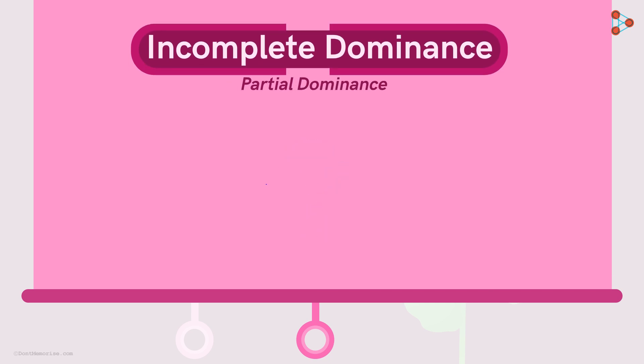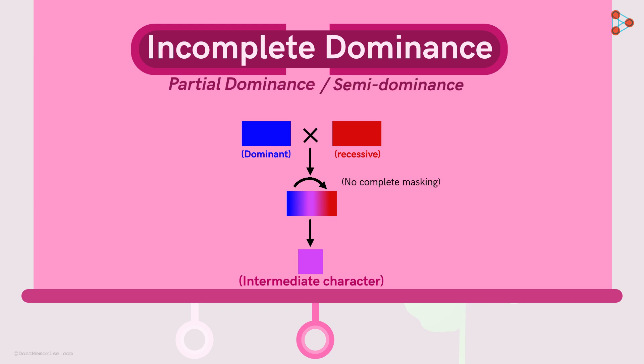Does it indicate that the dominance is partial? That's right! The dominant character expresses itself, but not completely. It means that the dominant alleles do not completely mask the effect of the recessive alleles. As a result, offsprings with intermediate characters are obtained. This is the reason why the phenomenon is also called partial dominance or semi-dominance.